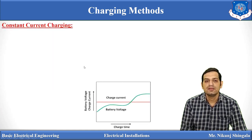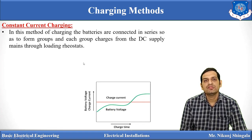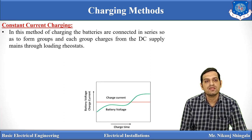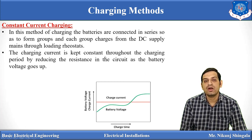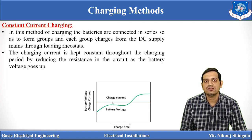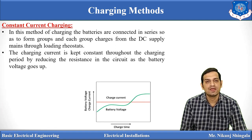In the constant current charging method, current is kept constant and voltage is varied. Batteries are connected in series to form groups, and each group is charged from a DC supply through a variable resistance rheostat. The rheostat value is reduced as battery voltage rises, to maintain a constant charging current throughout the process. The disadvantage of this method is that it takes more time compared to the constant voltage charging method.